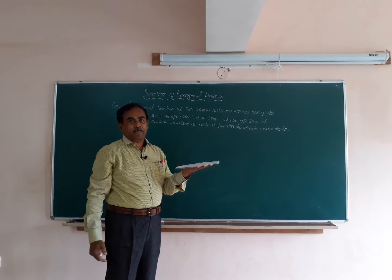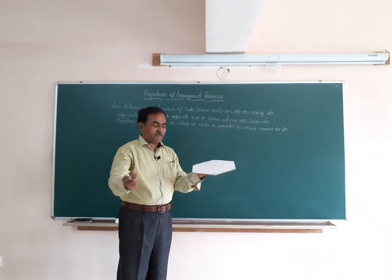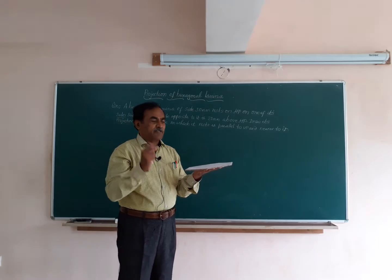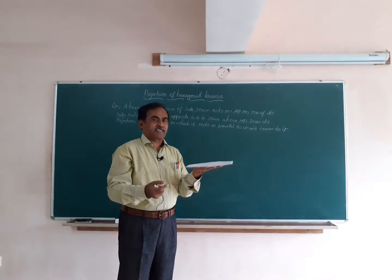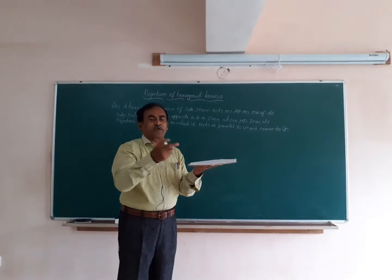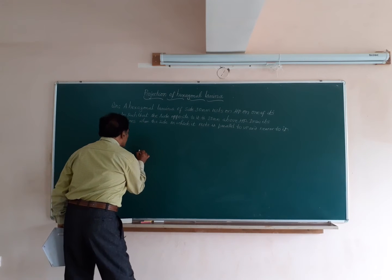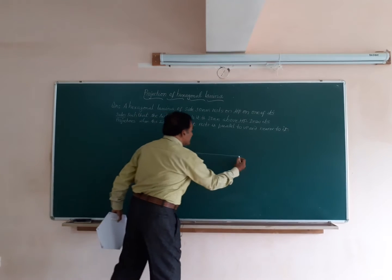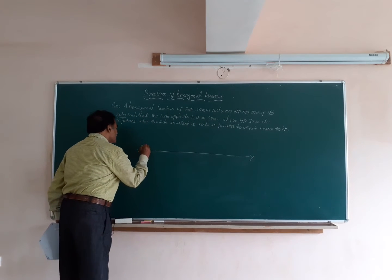Keep the lamina on HP such that one side is to your left and obtain the top and front views of the lamina. When you keep the lamina like this, side AB is to your left and perpendicular to VP. We start the problem by marking the XY line — the line of intersection of VP and HP — indicating first angle projection.